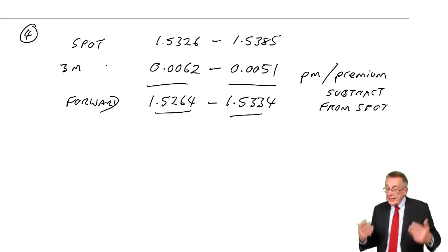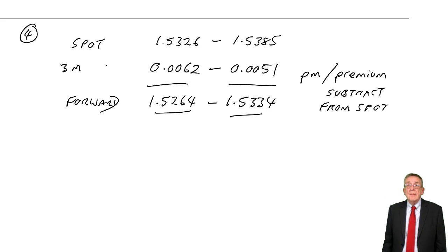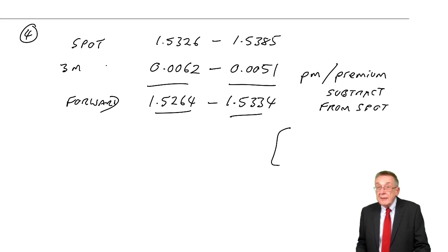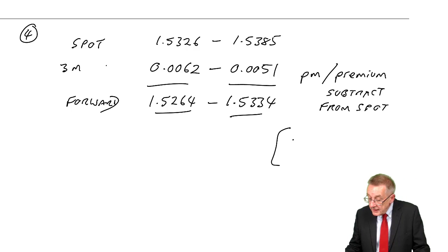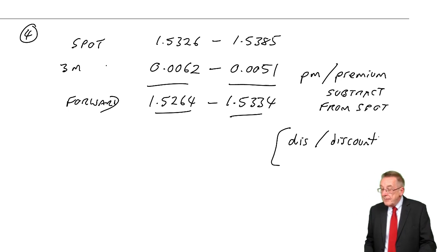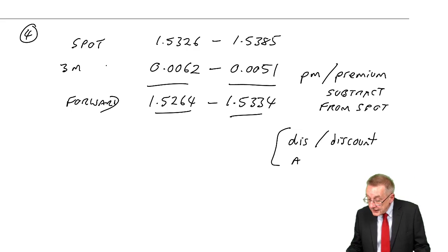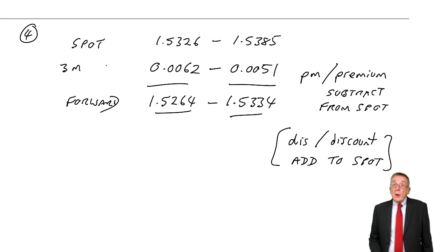Now, to think that we're in the middle of an exam is awkward. Just remember, you subtract a premium. And the alternative, if they wanted you to add it, it would be quoted dis, which is discount. If the forward rate is quoted as a discount, you add to spot.